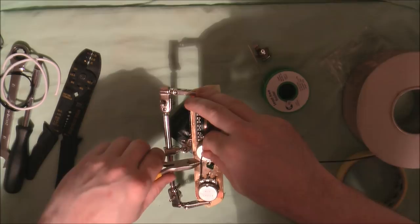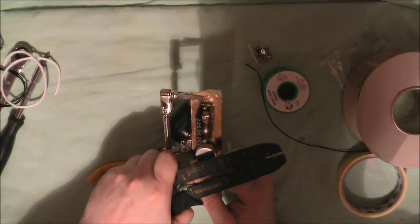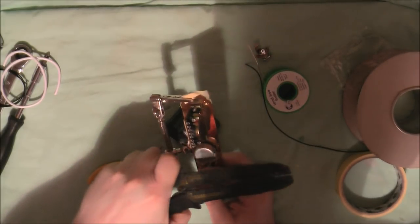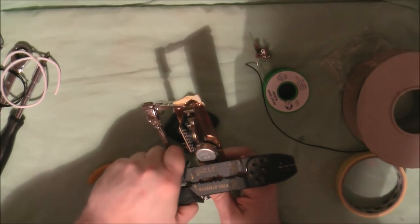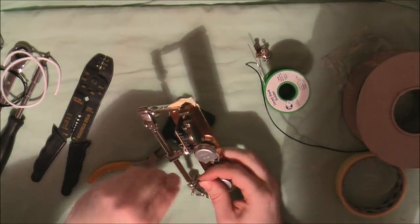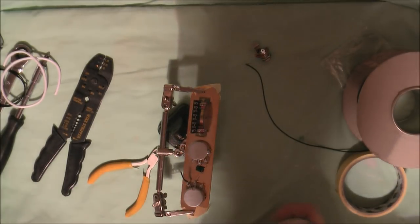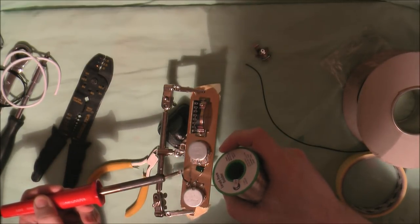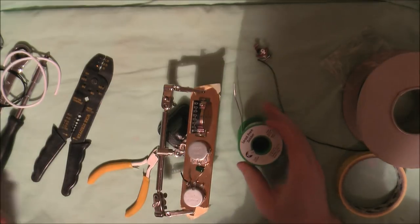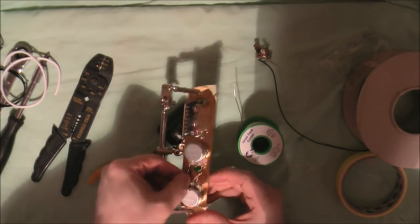And then a blob of solder on the tone pot. Check the width of that. That should be fine. And just trim a little off there.